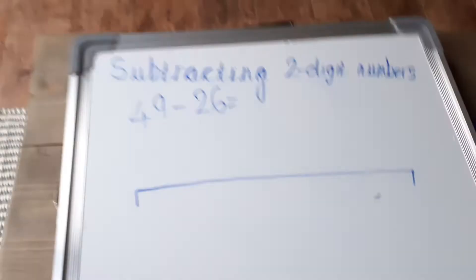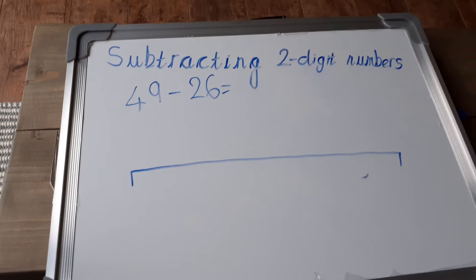I know you're used to doing number lines in class. We've done those a lot. And at this end of the number line is our low number, our small number, which is 26. So we'll write that here, 26.